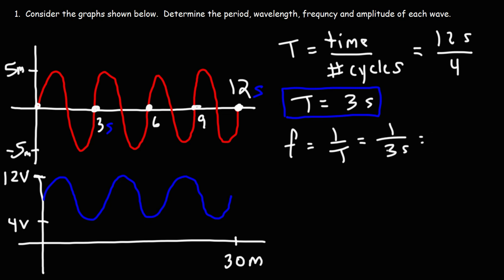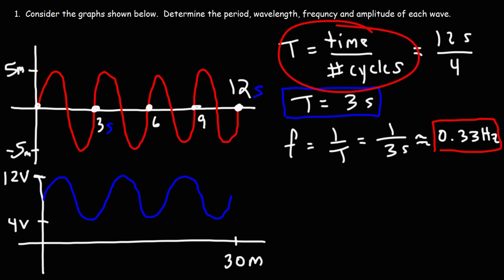The frequency is one over the period, so that's 1 over 3 seconds, which is approximately 0.33 Hertz. The frequency is also the reciprocal of the period — it's the number of cycles divided by the time, or the number of cycles a wave goes through every second.